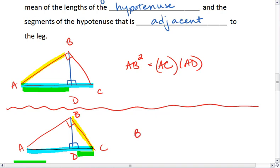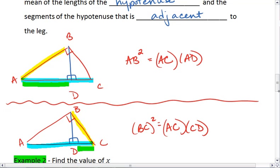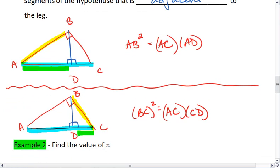We get that BC, BC squared, equals the entire hypotenuse AC times the part of the hypotenuse that's closest, CD or DC, doesn't really matter. Okay. If you feel comfortable with these two theorems, we'll go on to example two.